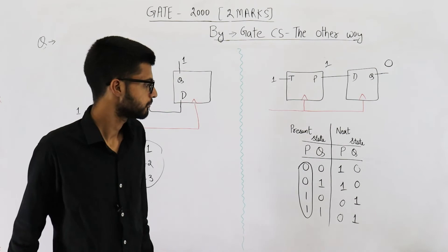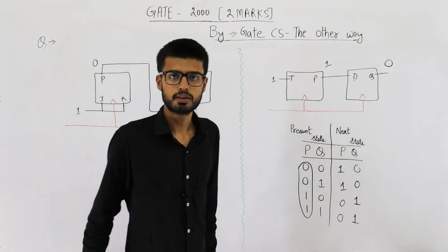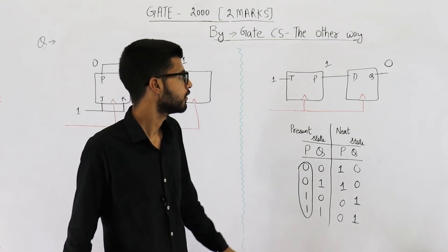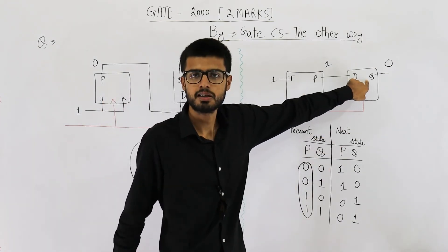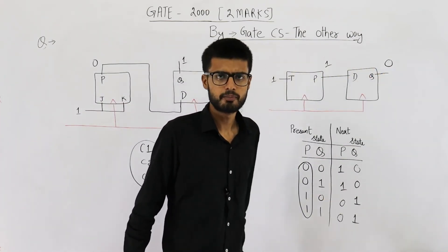From this table you can see the next state of the counter that means P and Q are a function of P only. We don't even need to know what was the current value of Q to determine its next value because anyways it's taking the value of P.